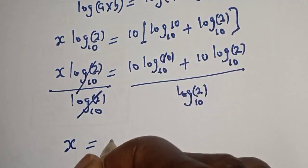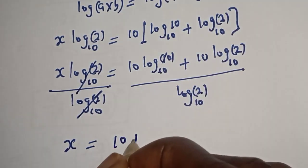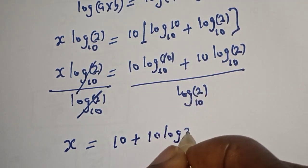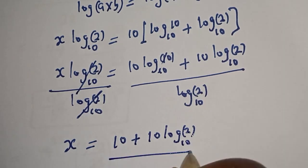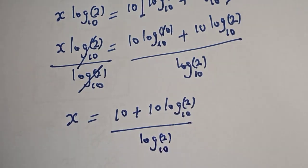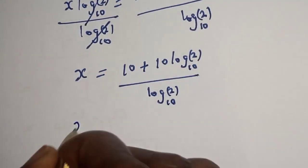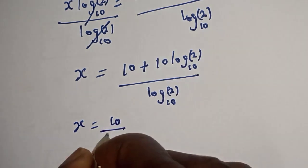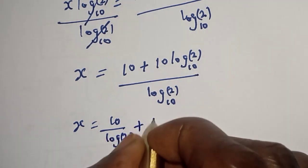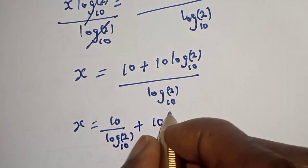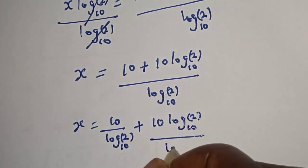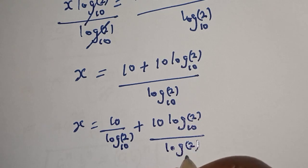Log 10 base 10 is 1, so x is equal to 10 log 10 base 10 plus 10 log 2 base 10 over log 2 base 10, which equals 10 over log 2 base 10 plus 10 log 2 base 10 over log 2 base 10.